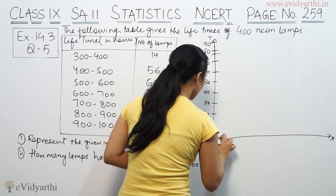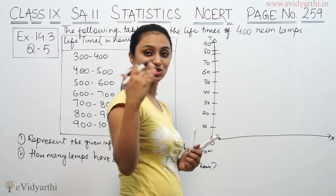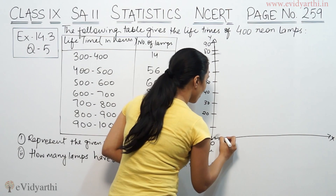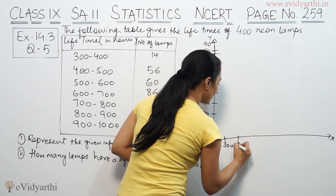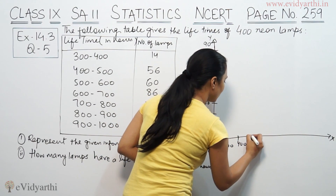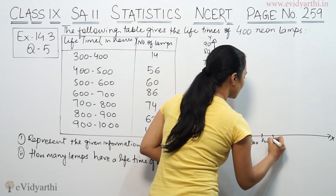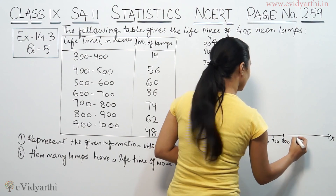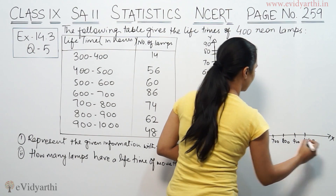You can see the markings. On the x-axis, we mark: 300, 400, 500, 600, 700, 800, 900, and 1000.